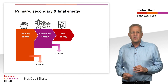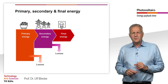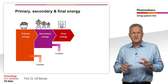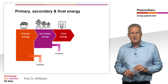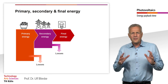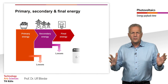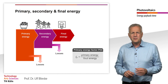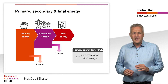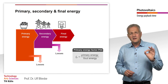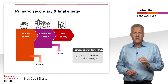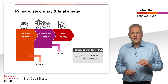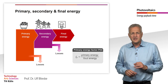In order to obtain comparable results when creating an energy balance, the final energy is first converted into its primary energy equivalent. To do this, we define the primary energy factor Fp. This corresponds to the ratio of primary energy to the final energy. For example, the primary energy factor of the German electricity mix in 2022 is 2.5. This means for 1 kWh of electrical energy, 2.4 kWh of primary energy are needed.